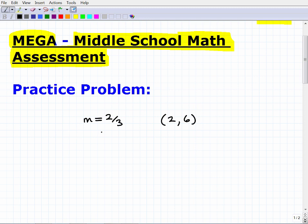So what I'd like you to do is to find the equation of a line. I want you to find the equation of a line that has a slope of two thirds and passes through the point (2, 6). We'll write that in Y equals MX plus B form. If you want to pause the video and give that a whirl, that's fine. I'm going to go through the solution here.